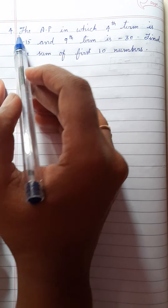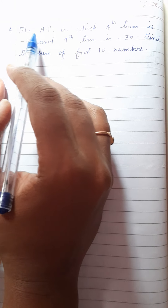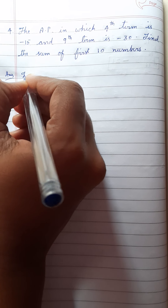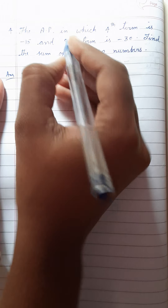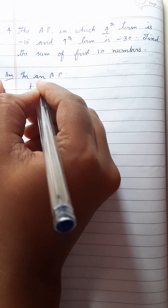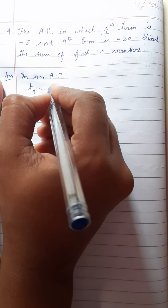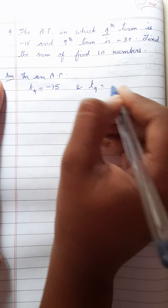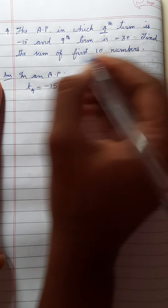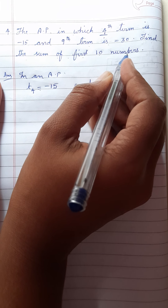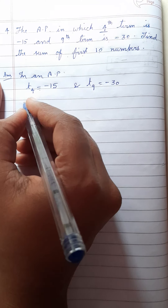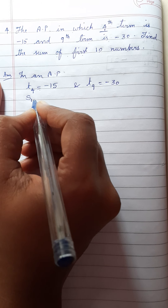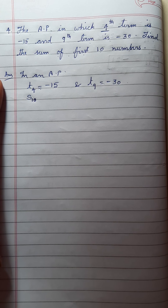Problem: In an AP, the fourth term is negative 15, so T4 is equal to negative 15, and the ninth term is equal to negative 30. Find the sum of the first 10 terms, that is S10.